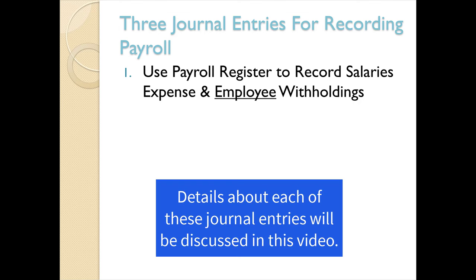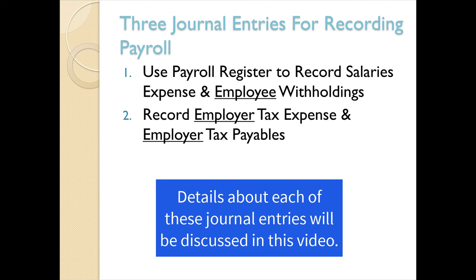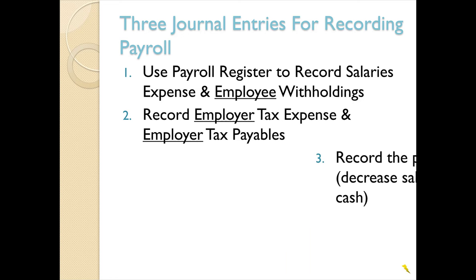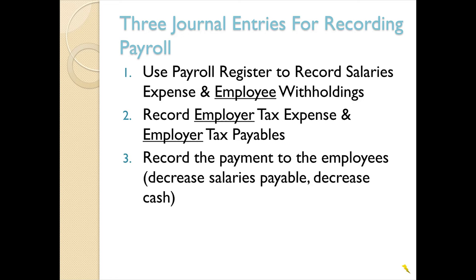The first of the three payroll entries uses the payroll register to record salaries expense and employee withholdings. In the second journal entry we will record the employer tax expense and employer tax payables. Then the third entry is the easiest — we will record the payments to the employees, which means we will decrease salaries payable and decrease cash. Let's look at each of these in detail.